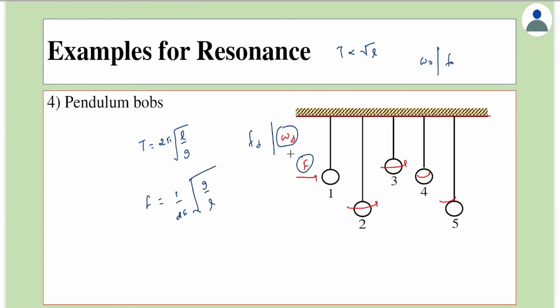There are many more examples of resonance around us. The basic point is that whenever a system is in resonance, some parameter becomes maximum — in this case amplitude, but it could also be energy or power.